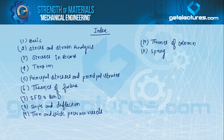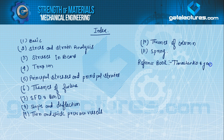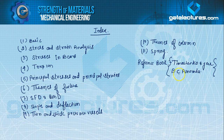For reference books in Strength of Materials, you can prefer Timoshenko and Gere — this is a very good book. The second book you can use is BC Punmia. You can follow these two books for reference and practice, both for ESC and GATE point of view.